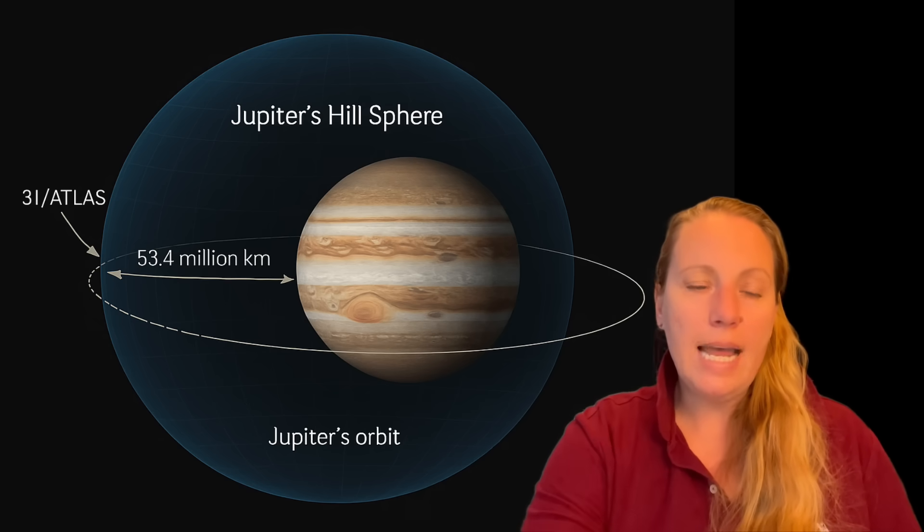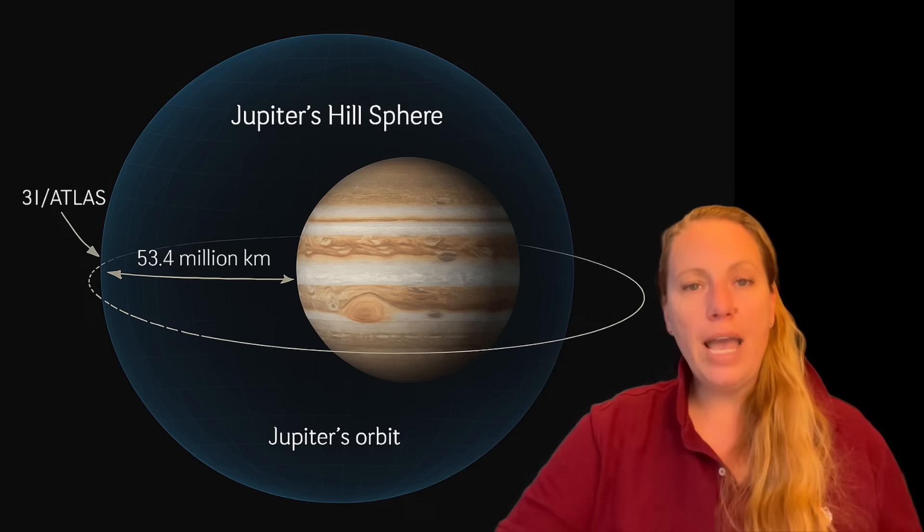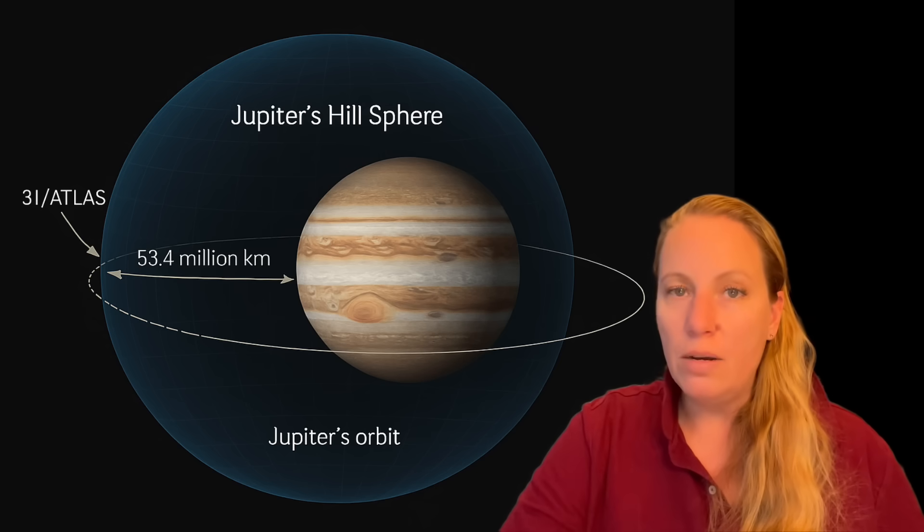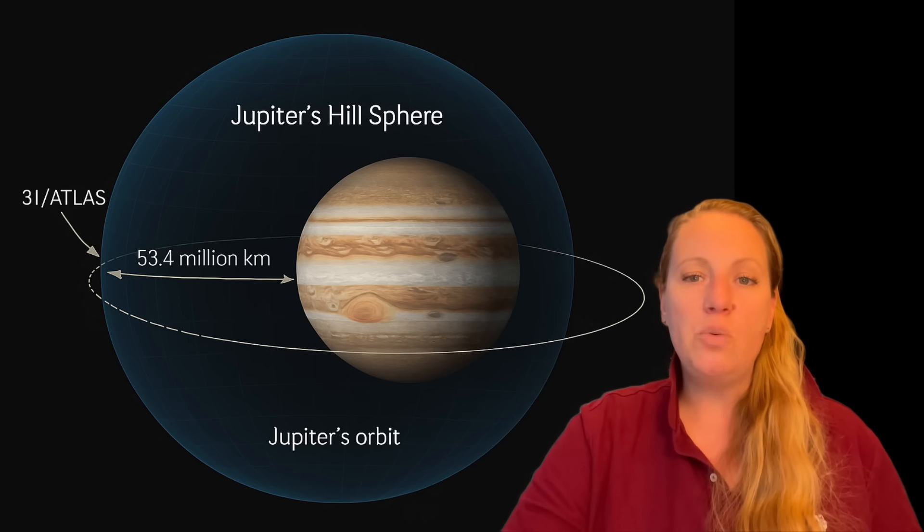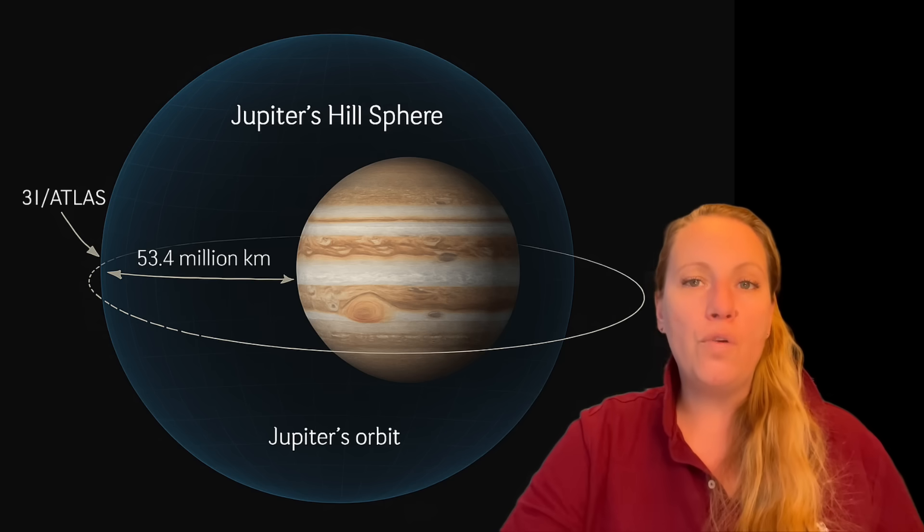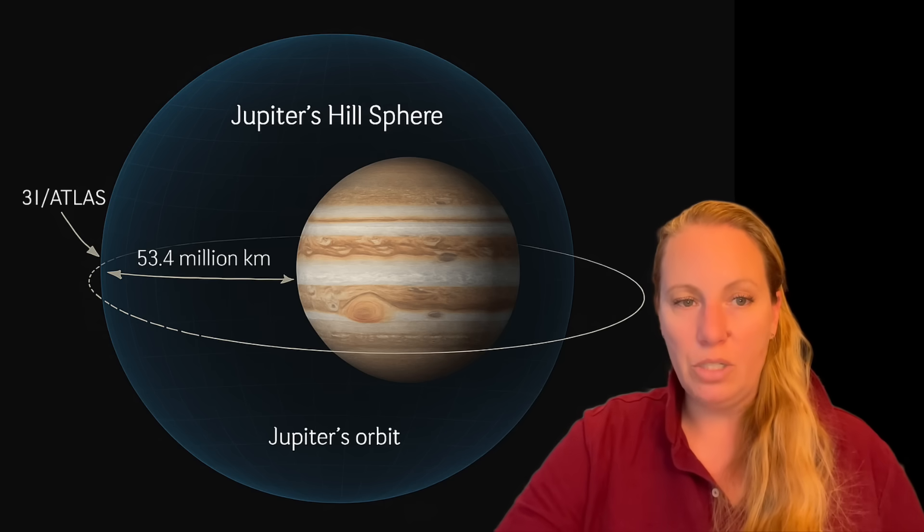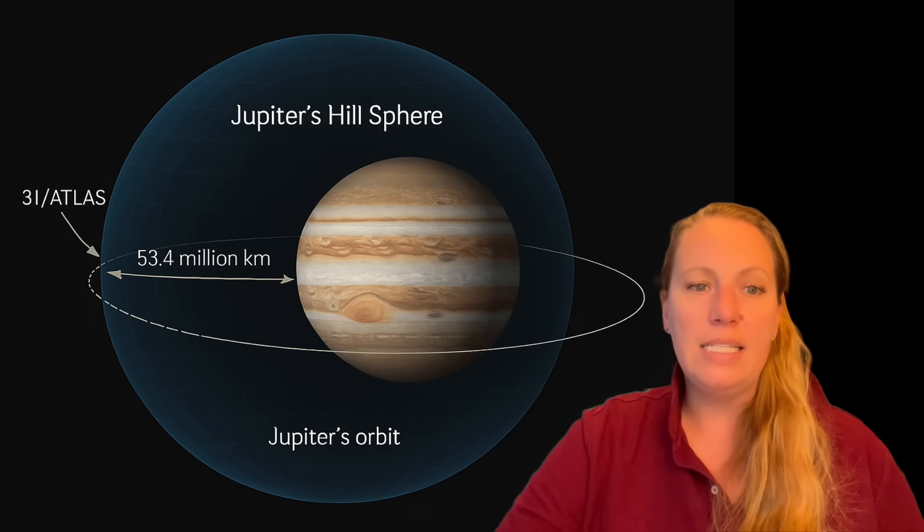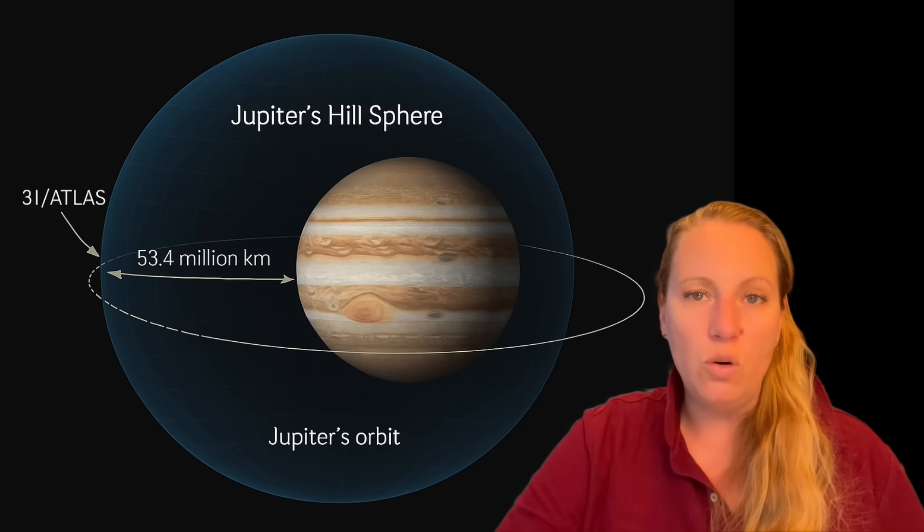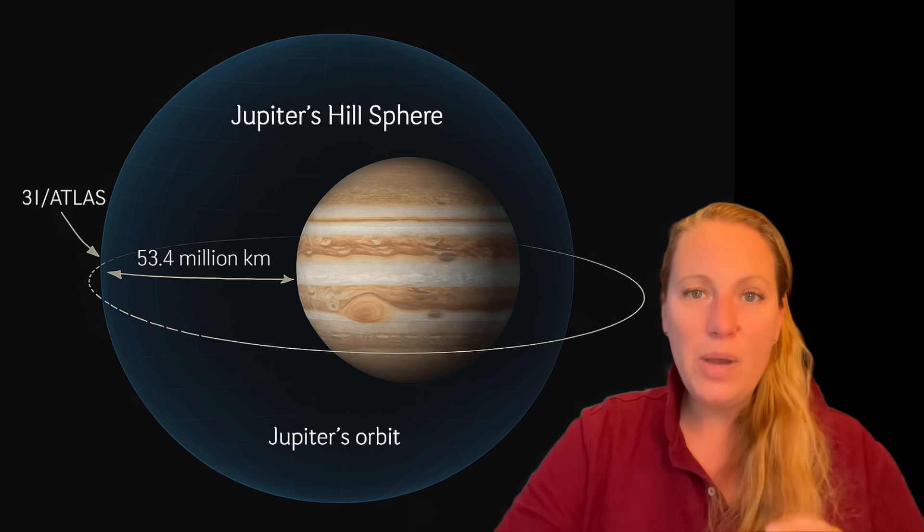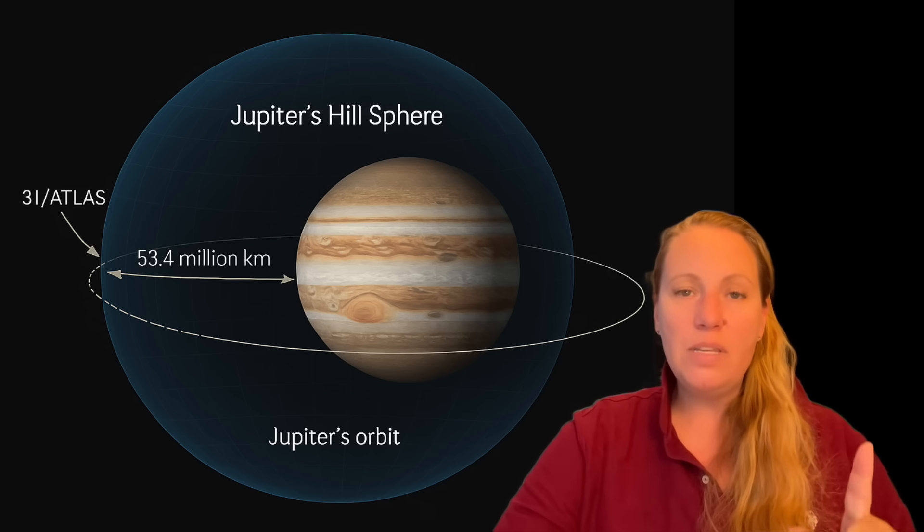So what does that mean? Earlier forecasts showed that 3i Atlas will pass Jupiter on March 16th, 2026 at a distance of 53.445 million kilometers. And here comes Jupiter's Hill radius at that time is 53.502 million kilometers. Is that a coincidence that it gets into this Hill radius?